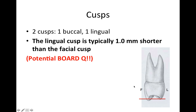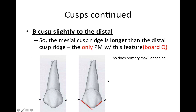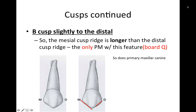This tooth has two cusps: one buccal cusp and one lingual cusp. Something unique is that the lingual cusp is typically about a millimeter shorter than the facial cusp. The buccal cusp is slightly offset to the distal. This leads to a common exam question about which cusp ridge is longer — in this case, the mesial cusp ridge is longer than the distal cusp ridge. This is the only premolar with this feature, so it's going to be on the board — anytime there's an exception, remember it.